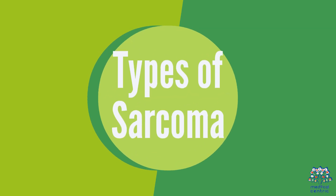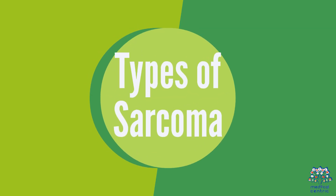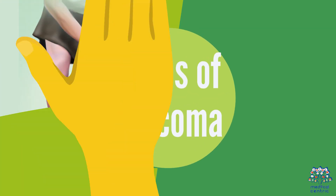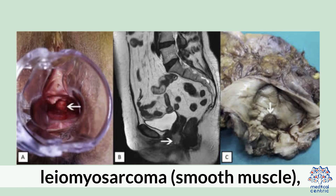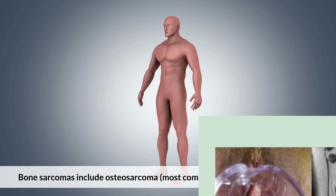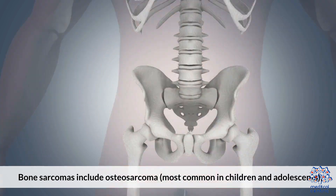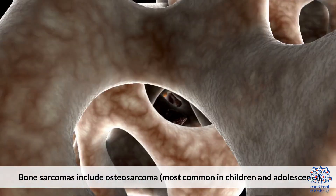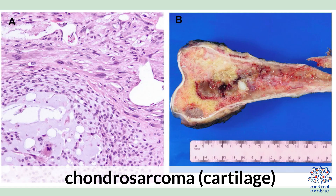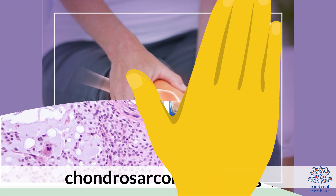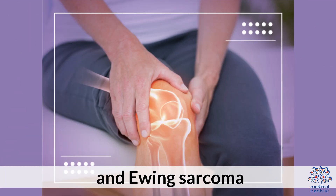Types of Sarcoma. Soft tissue sarcomas, which are more common, include liposarcoma (fat tissue) and leiomyosarcoma (smooth muscle). Bone sarcomas include osteosarcoma, most common in children and adolescents, chondrosarcoma (cartilage), and Ewing sarcoma.